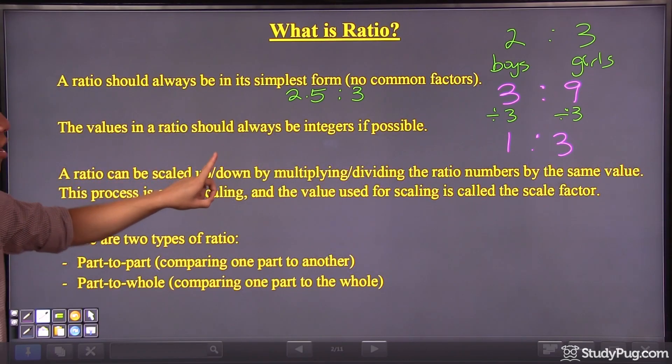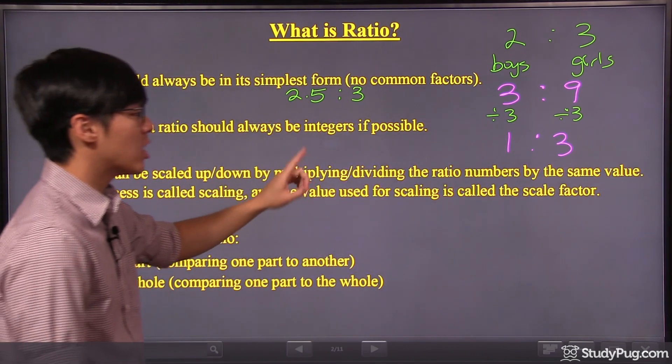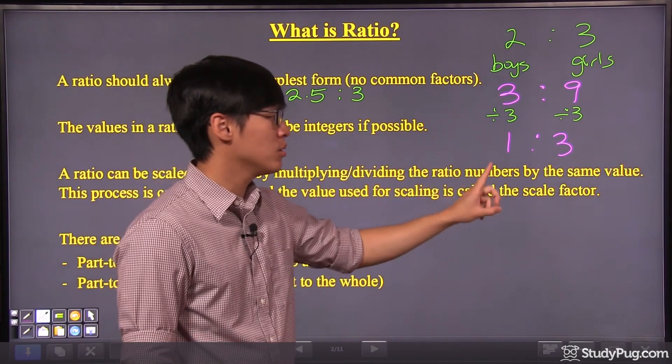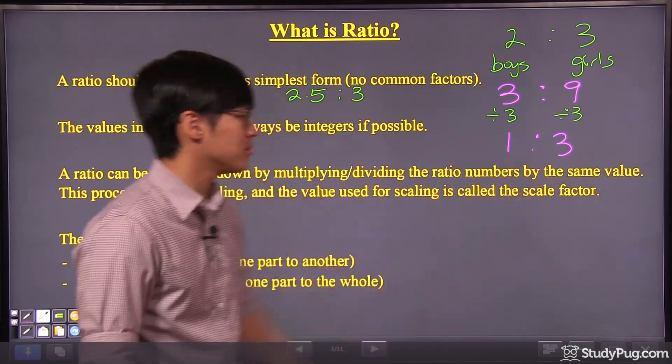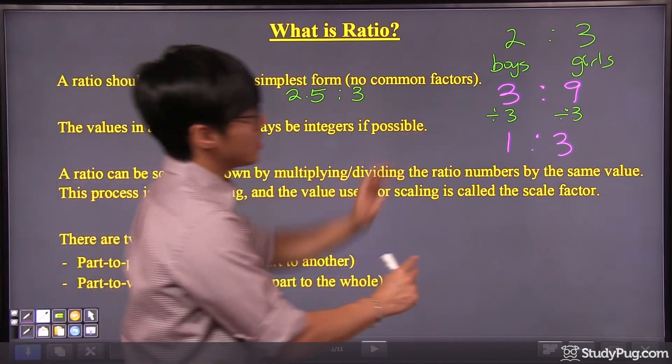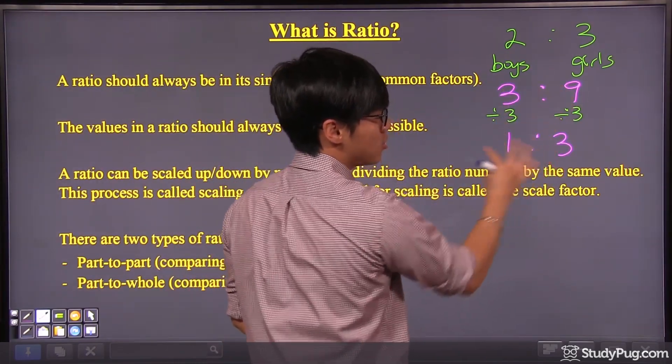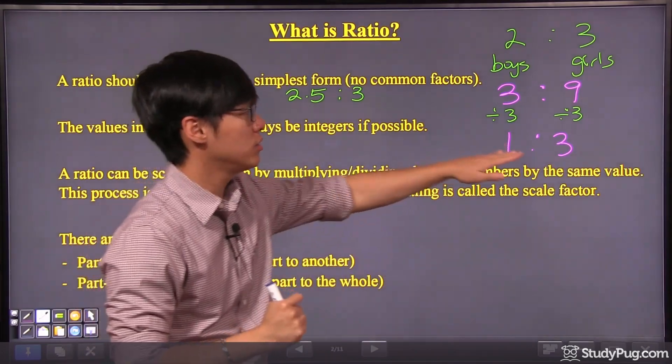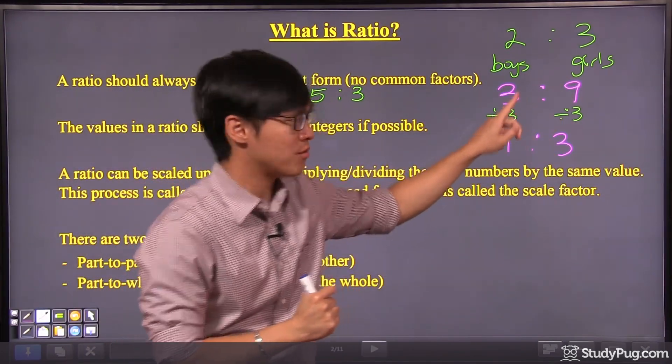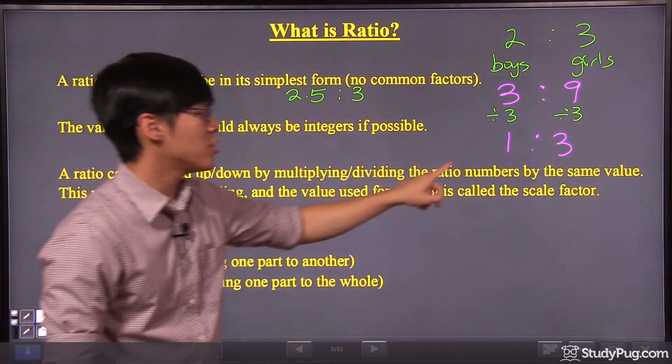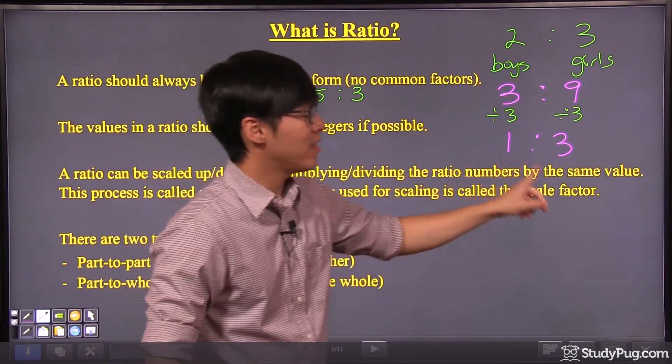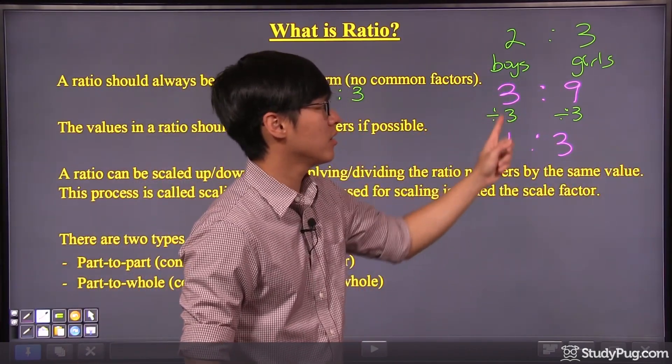A ratio can be scaled up or down by multiplying or dividing the ratio numbers by the same value. So just now over here, we have three to nine. How do we reduce it back to the simplest form, one to three? We made some division. So we are dividing the ratio numbers, three and nine, by the same value. We divide three on the left, we divide three on the right as well, dividing the same numbers.